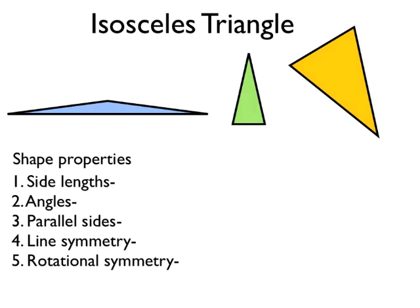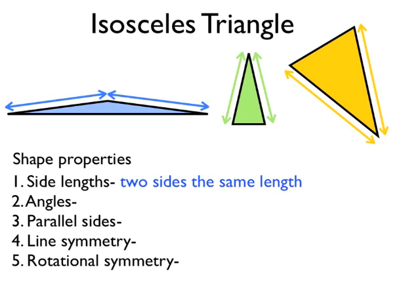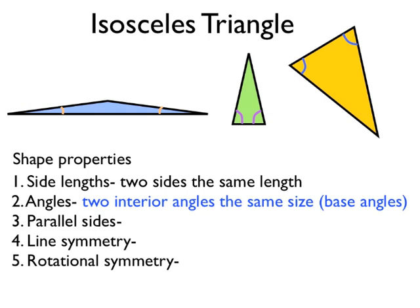So let's look at isosceles triangles now. I've drawn three isosceles triangles here. In an isosceles triangle, two of the sides have the same length — whereas in an equilateral triangle, three sides have the same length. Two of the angles are also the same size; we call these the base angles. Note that the base angles aren't always at the bottom — if you look at the orange triangle on the right, the base angles are actually at the top. In an isosceles triangle, two of the interior angles are the same size and we call them the base angles.